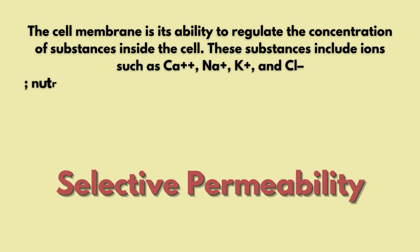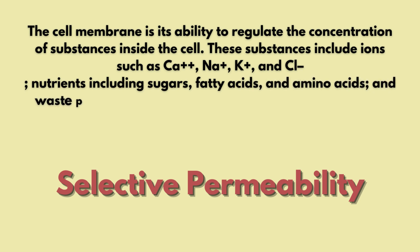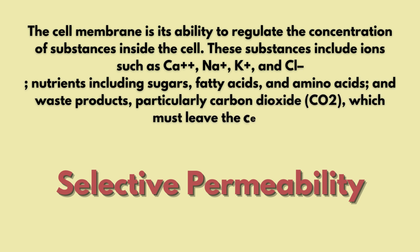For example, ions such as calcium, sodium, potassium, and chlorine, as well as sugars, fatty acids, amino acids, and waste products like carbon dioxide are regulated through the cell membrane by concentration. The phospholipids help maintain tight packing. Selective permeability means only selected substances can pass. Transport has two types: passive transport and active transport.